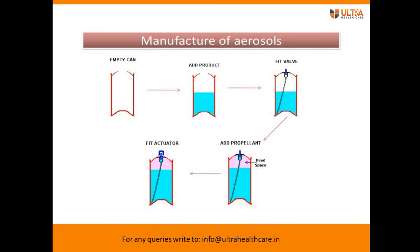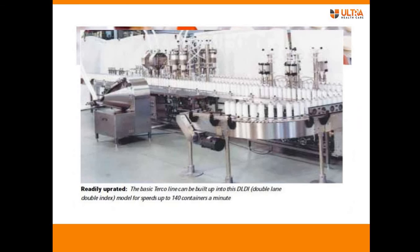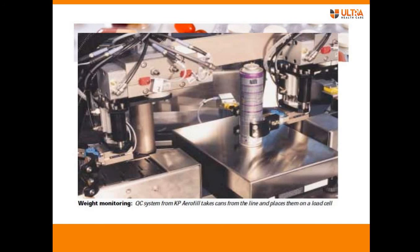Manufacture of aerosols: first, take an empty can and add the product concentrate. After that, fit the valve, then add the propellant, and finally fit the actuator. This is the whole manufacturing process of aerosols. The filling equipment includes pressure filling equipment used in laboratories, a rotary upgraded machine used for large production of aerosols, a pressure unit for laboratory filling, and a weight monitoring machine for aerosols.